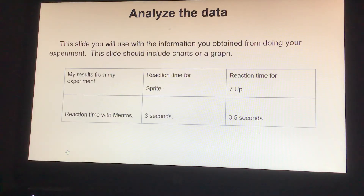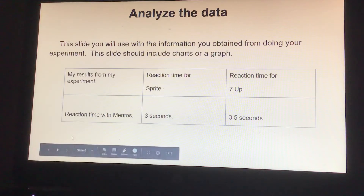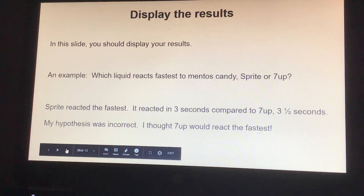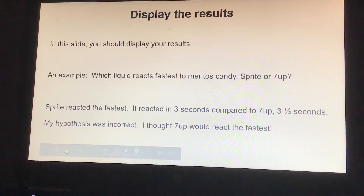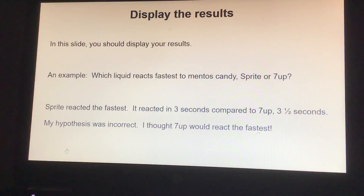You're going to analyze your data. This slide uses information obtained from doing your experiment and should include charts or a graph. For example: reaction time for Sprite — 3 seconds; reaction time for 7UP — 3.5 seconds. Make sure to label the time. Then on the display results slide, you present your findings: Sprite reacted the fastest at 3 seconds compared to 7UP at 3.5 seconds. My hypothesis was incorrect — I thought 7UP would react the fastest.